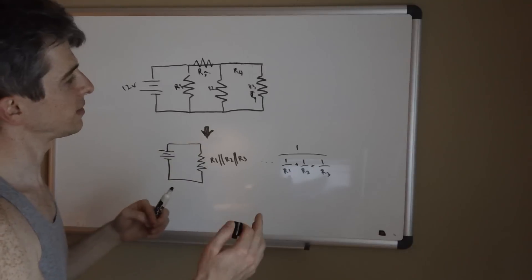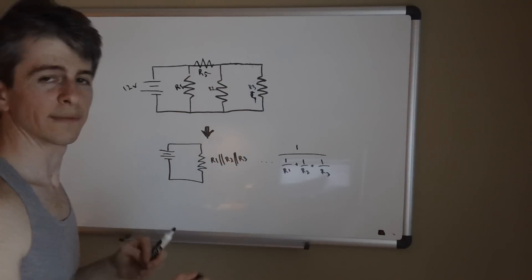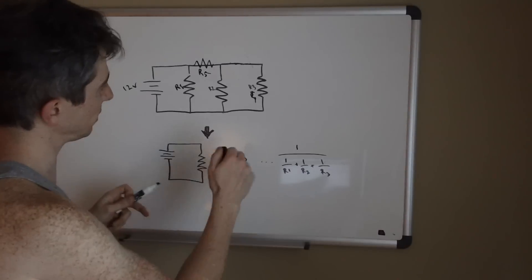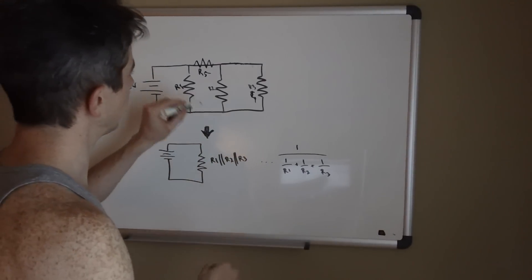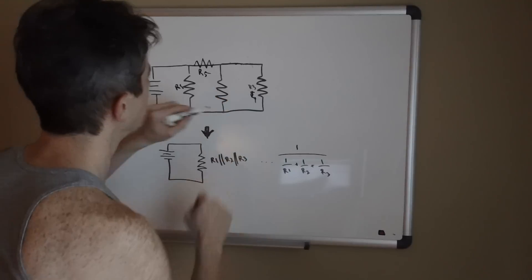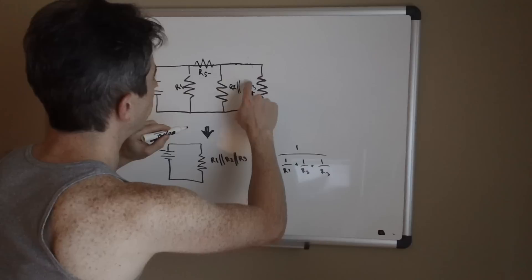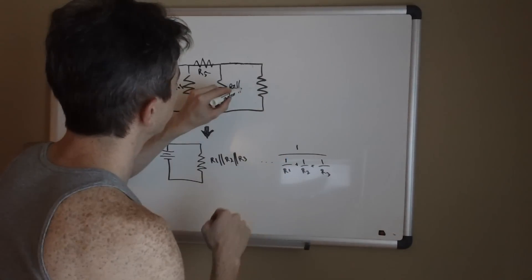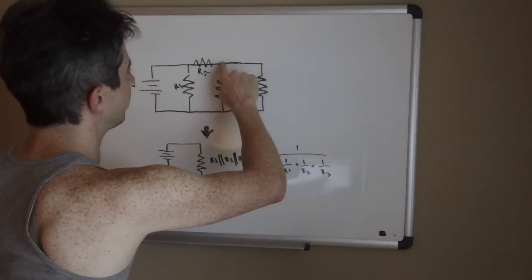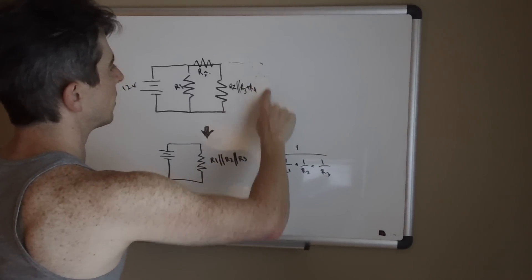And then once you have that you would create a parallel between these two. So you'd end up with this resistor here being, let me rewrite this over on the other side, for R2 we would end up with R2 parallel with R3 + R4, and of course this is all gone now.